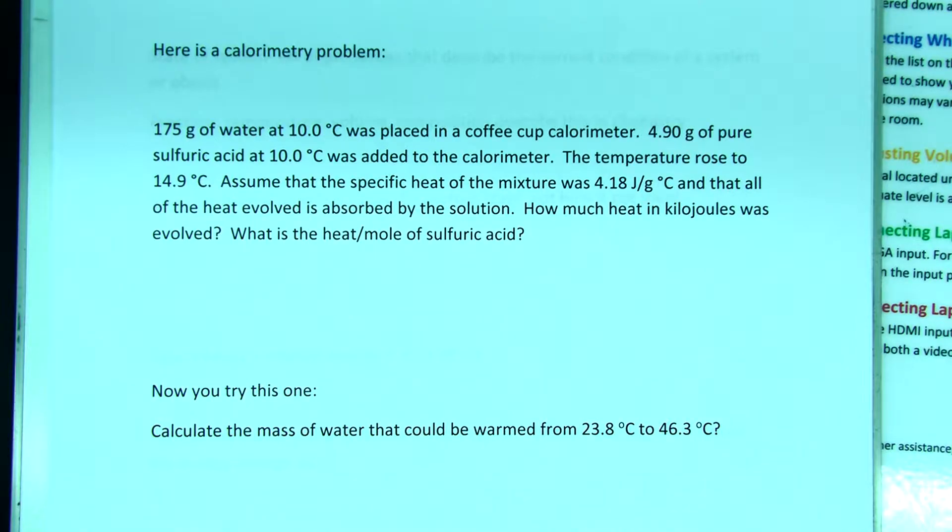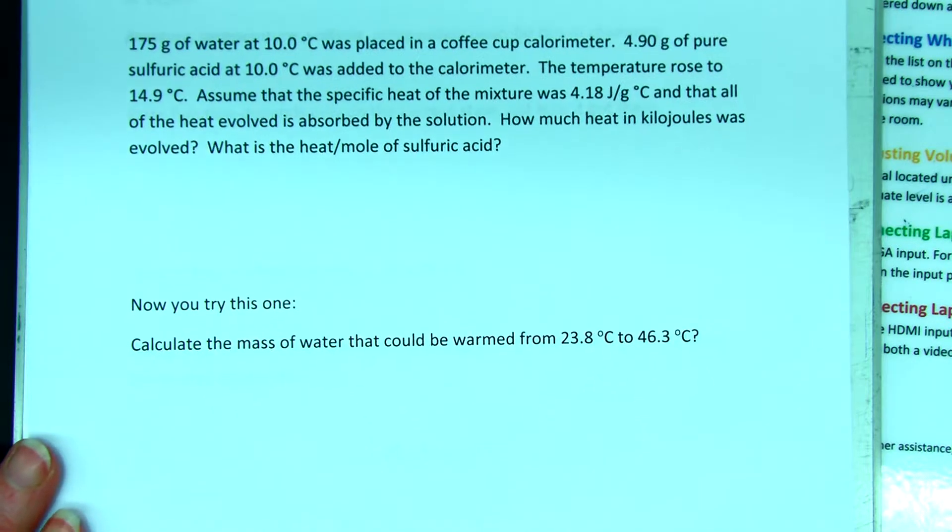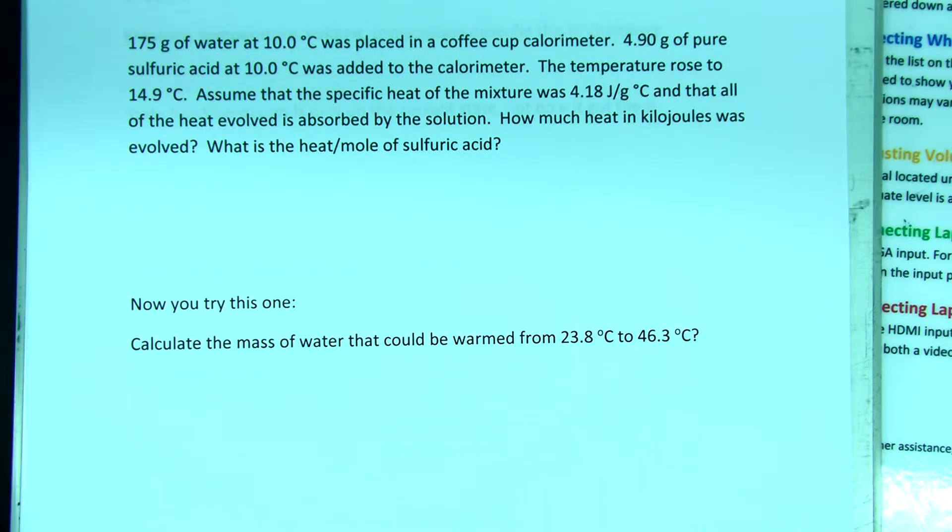We have 175 grams of water at 10 degrees Celsius in a coffee cup calorimeter. This is two nested polystyrene cups. We add 4.9 grams of pure sulfuric acid at 10 degrees C to the calorimeter.